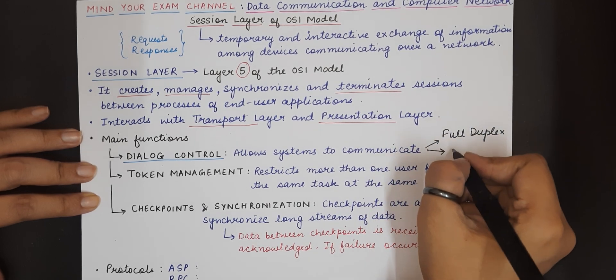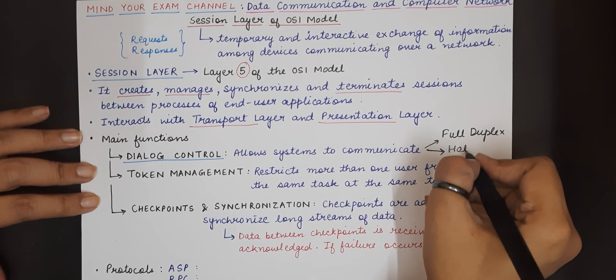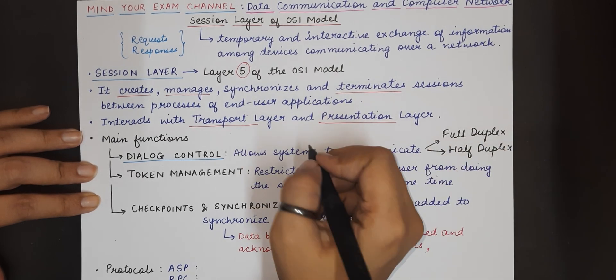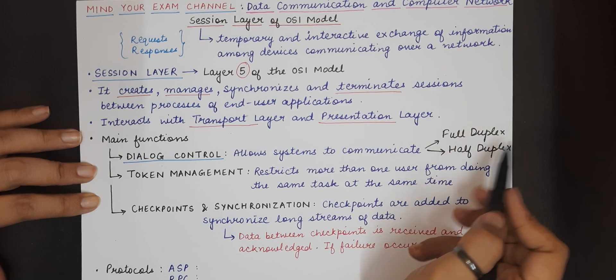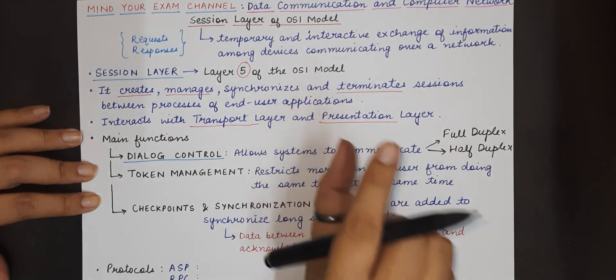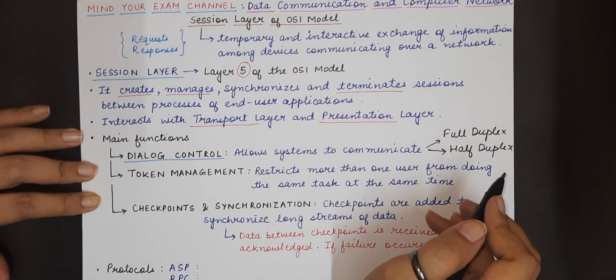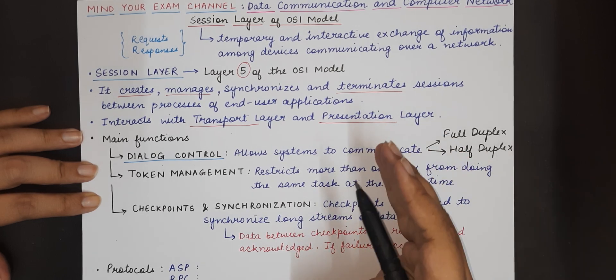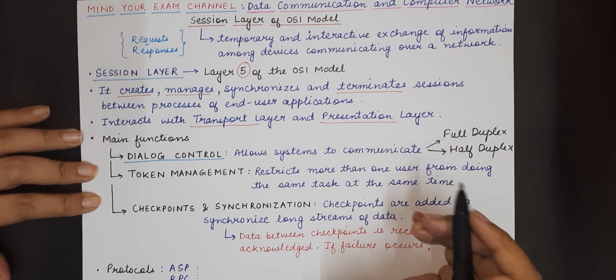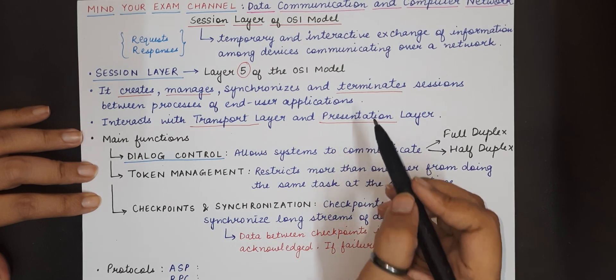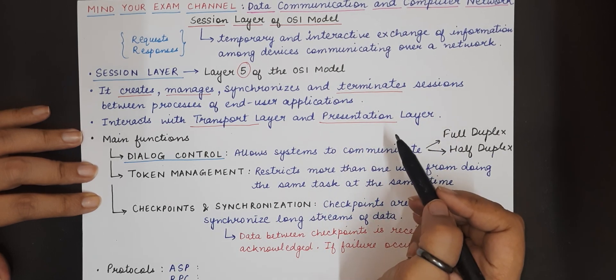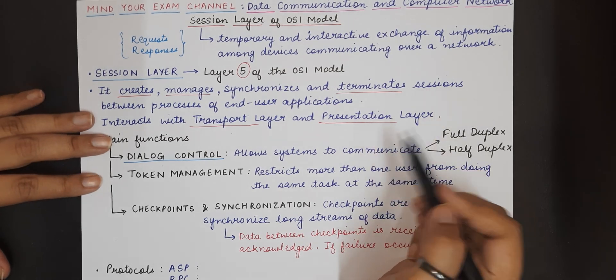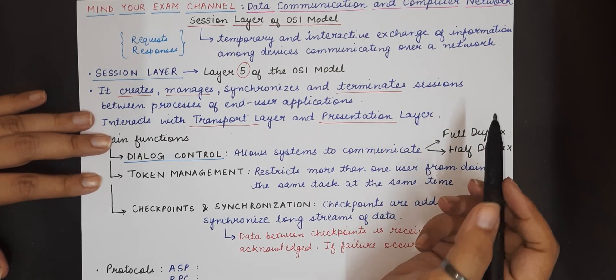So we have learnt what is full duplex and half duplex. Full duplex basically means that both the systems that are interacting with each other share a common connection through which both the sides can send information as well as receive information at any given time. So the sender can become the receiver at any other point in the conversation and this exchange of data can happen simultaneously.